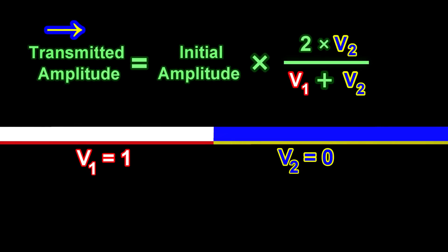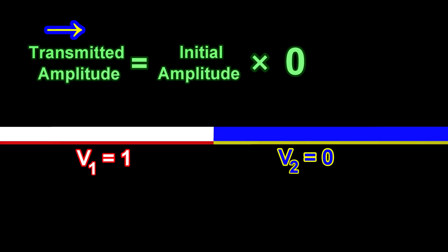The amplitude for the wave transmitted into the blue material can be described through this equation. If V1 is equal to 1 and V2 is equal to 0, then we get a transmitted amplitude of zero, which means that no wave is transmitted into the blue material.